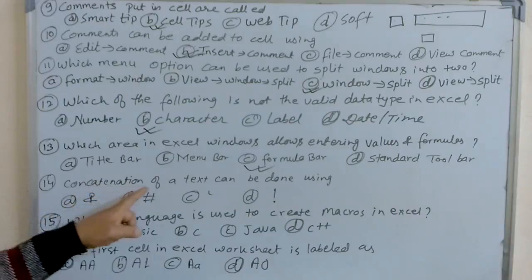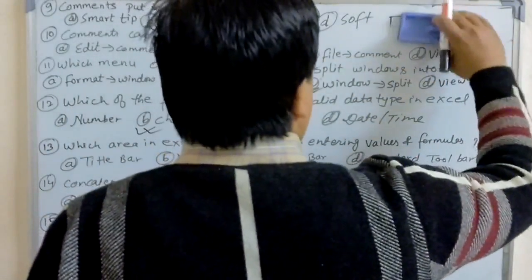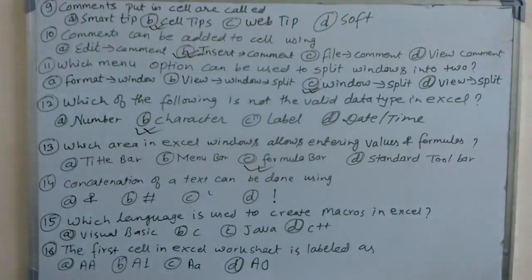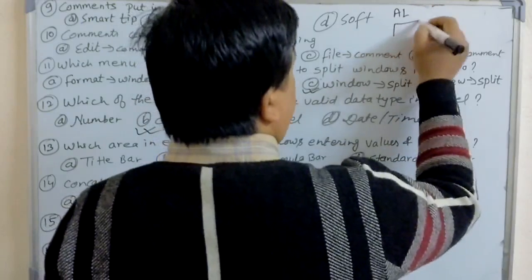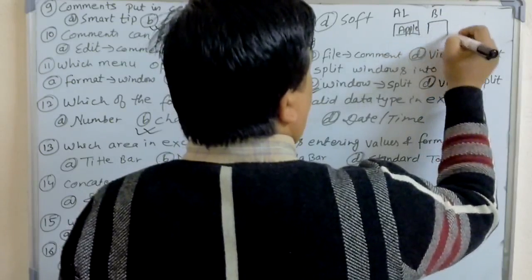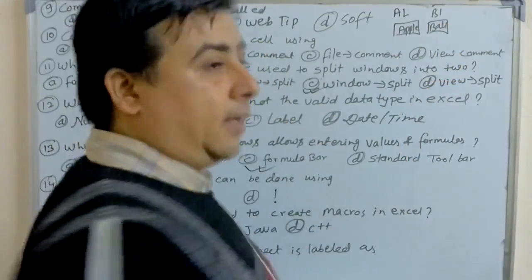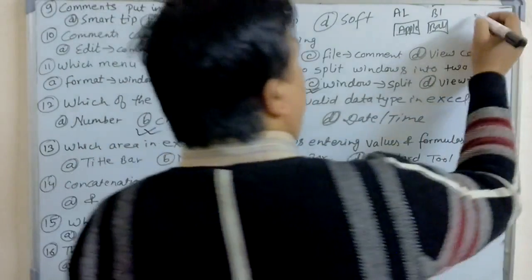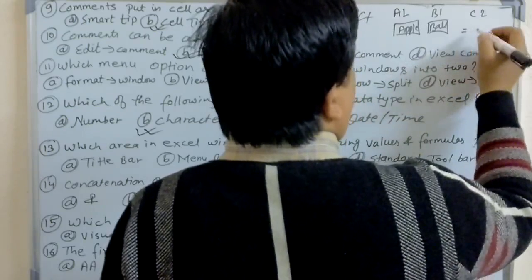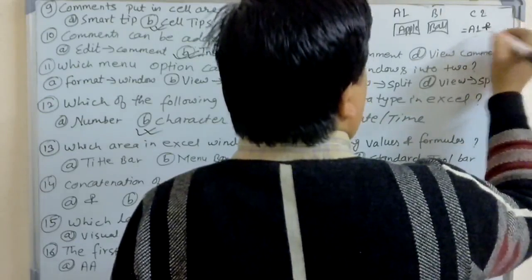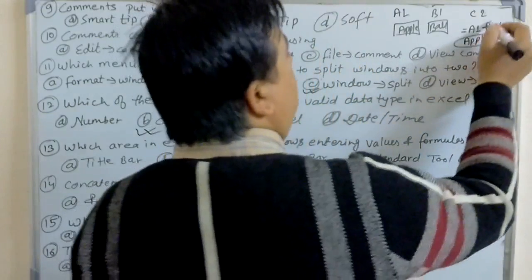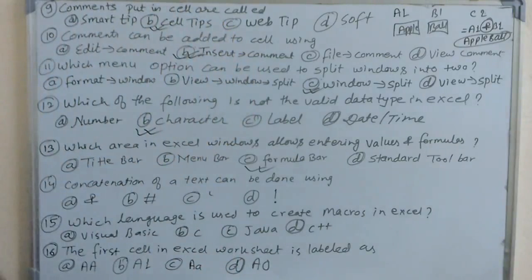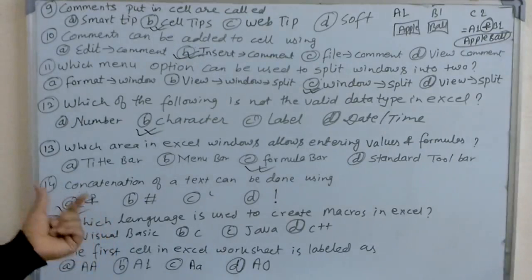Next question: concatenation of text can be done using what? Suppose in cell A1 there is 'apple' and in cell B1 there is 'ball'. If you want to concatenate them in cell C1, you write: equals A1 ampersand B1, and you will get the result 'apple ball'. So the ampersand sign is used to concatenate text in Excel. That's why A, the ampersand sign, is the answer.